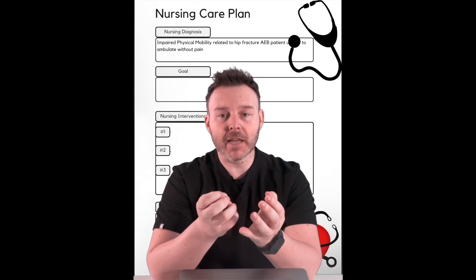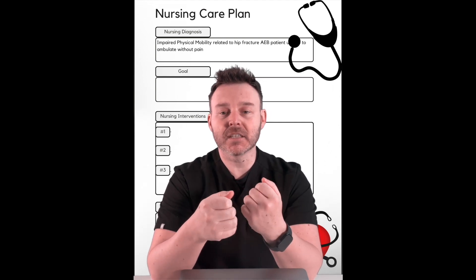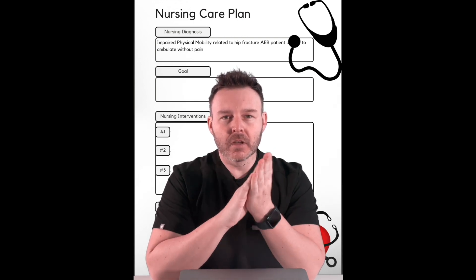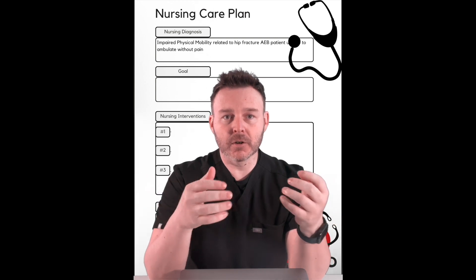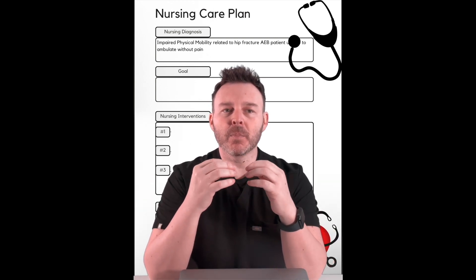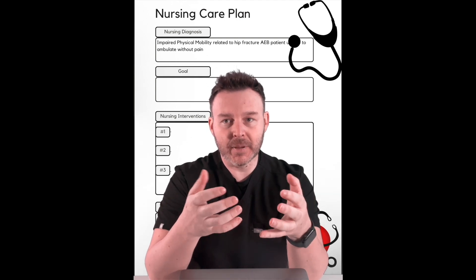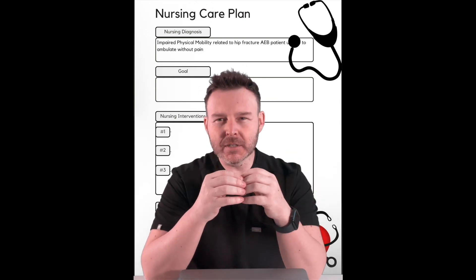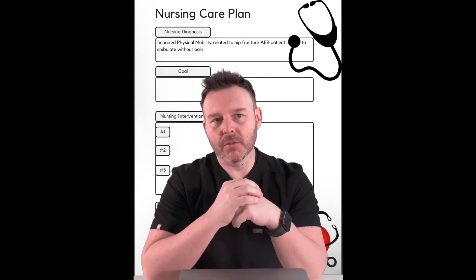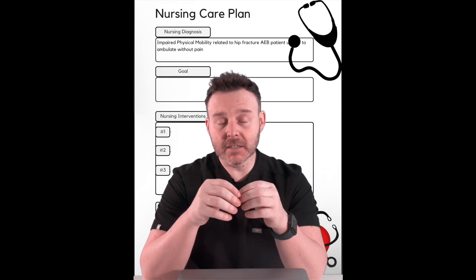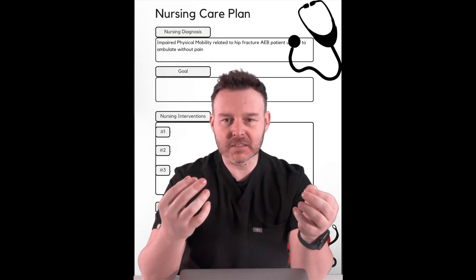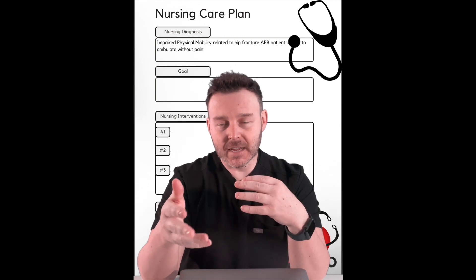Now let's make a goal for this patient. Goals have to follow the SMART criteria — Specific, Measurable, Attainable, Realistic, and Timely. For example, 'patient will experience improved mobility and independence in activities of daily living by the end of the hospital stay' is okay, but it's not really that specific. A better goal: patient will demonstrate proper techniques for transferring and ambulation by the end of the hospital stay. That's very specific, timely, measurable, and attainable.